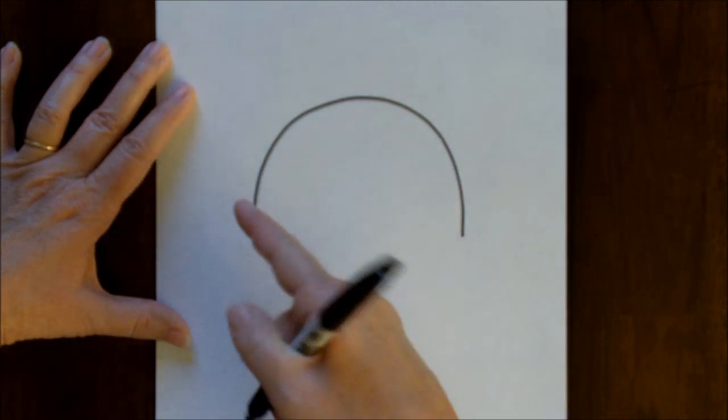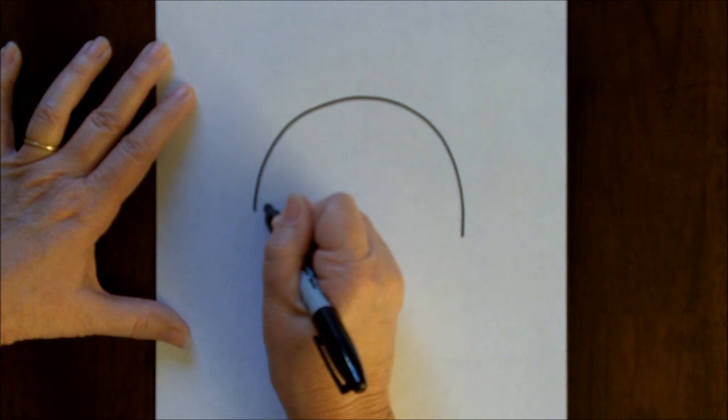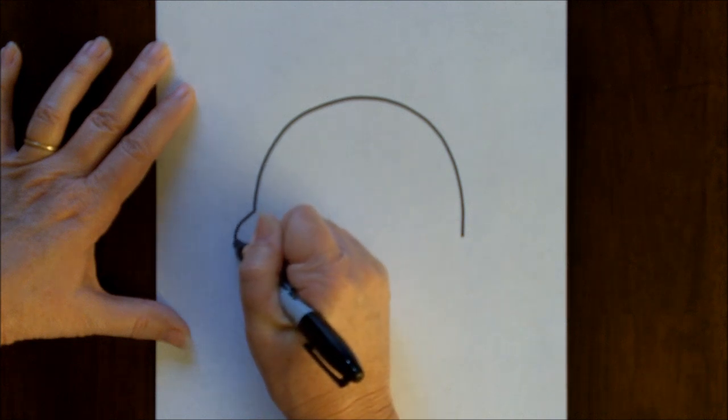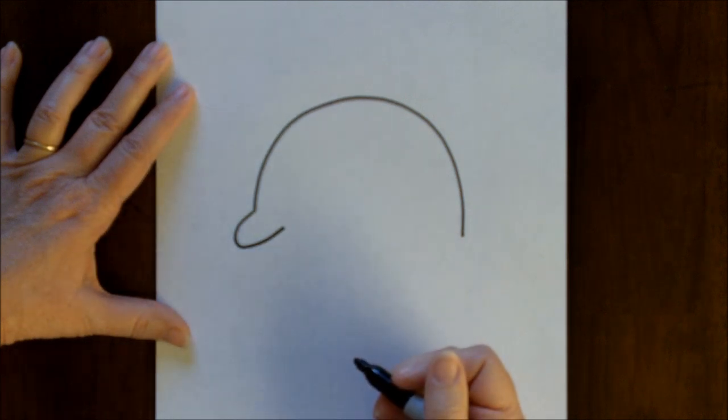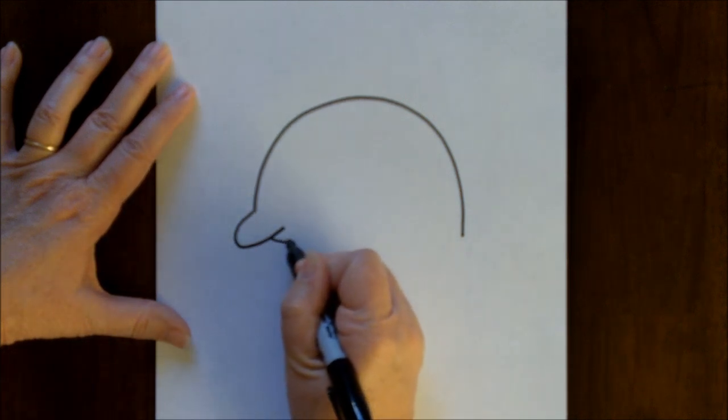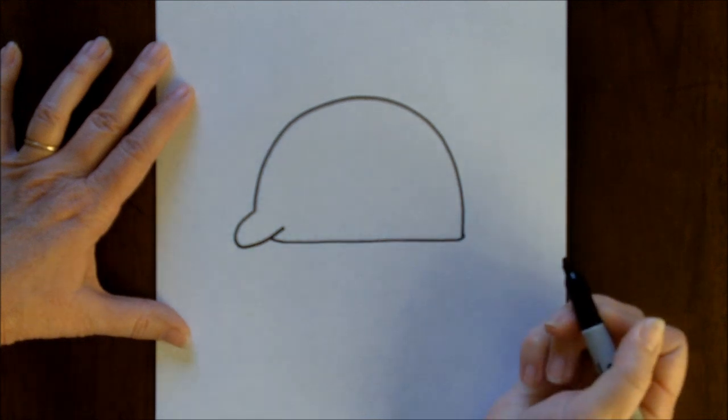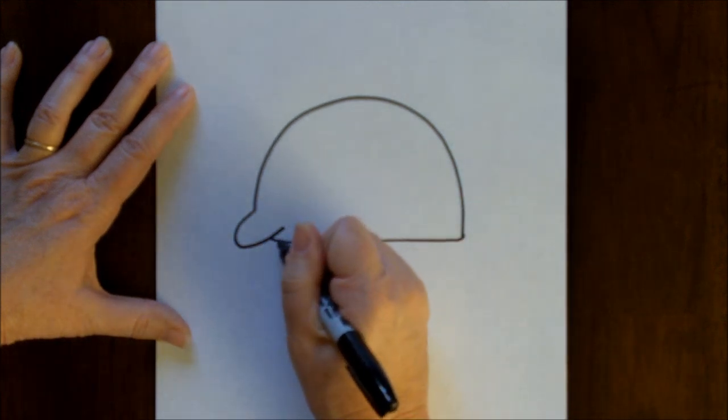The front part is shorter because we're going to put his nose here, and his nose is just a little bit of a curved line. We're going to close that up at the bottom, and we're going to put some feet on him.